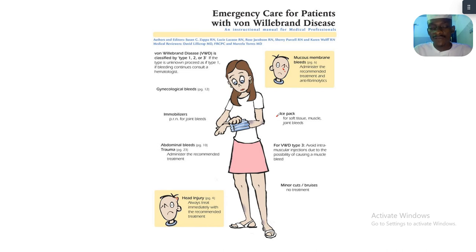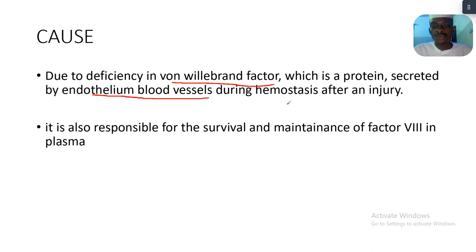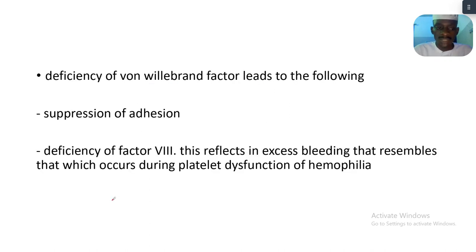The cause of von Willebrand disease is a deficiency in von Willebrand factor (VWF), a protein secreted by the endothelium of blood vessels during hemostasis after an injury. VWF is also responsible for the survival and maintenance of Factor VIII in plasma.